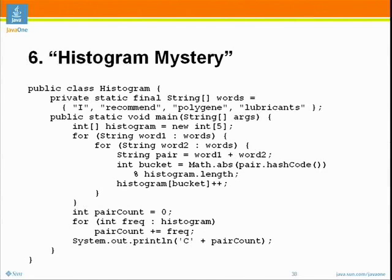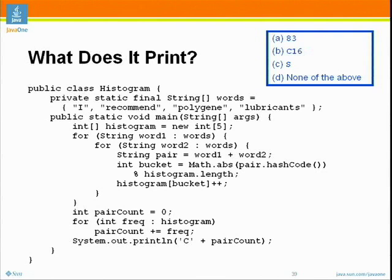C16 — that's a reasonable guess. Let's see if it's one of the options. Your options are: A, 83; B, C16; C, S; and D, none of the above. For those too young to have dealt with ASCII directly: capital A is 65 decimal.